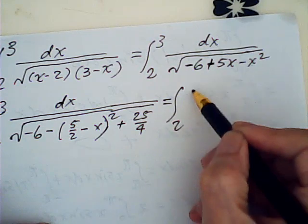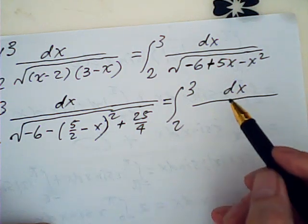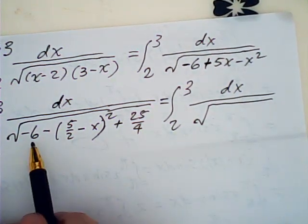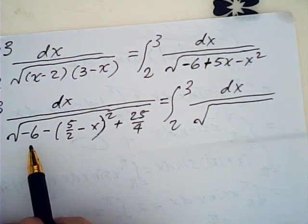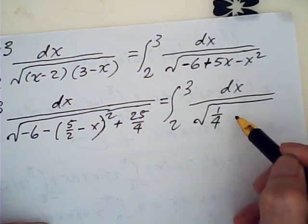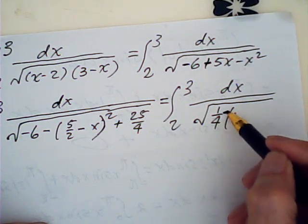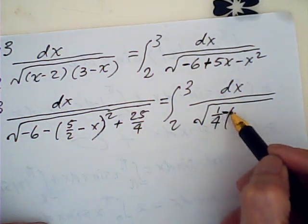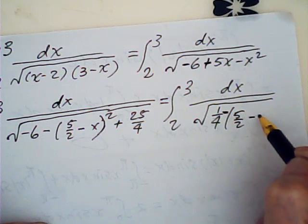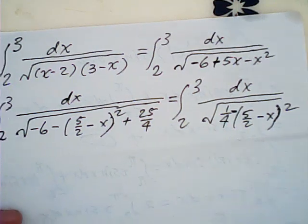This is equal to the integral from 2 to 3 of dx over the square root of minus - sorry - minus 5 over 2 minus x square. That is completely squared.